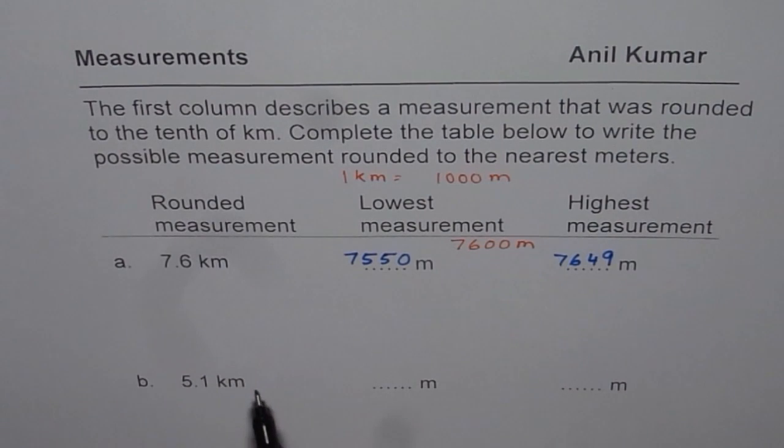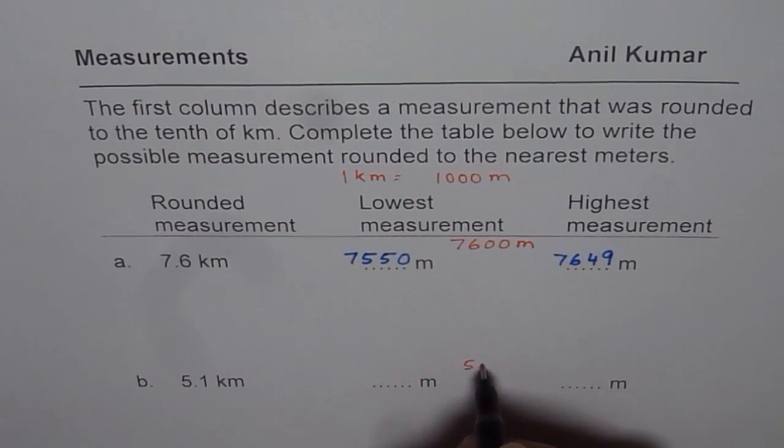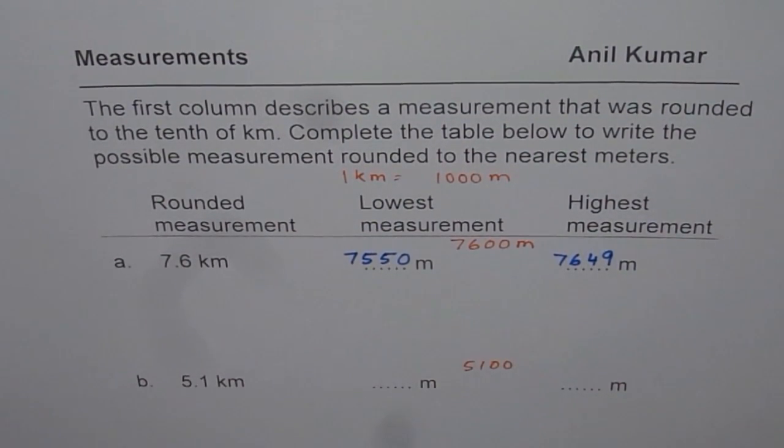Now, follow this method and do the second part of this question. 5.1 kilometer. So 5.1 kilometer is 5,100 and the numbers which can round to 5,100 could be 5,050, right? Or 5,149, right? So that is how you could do it.